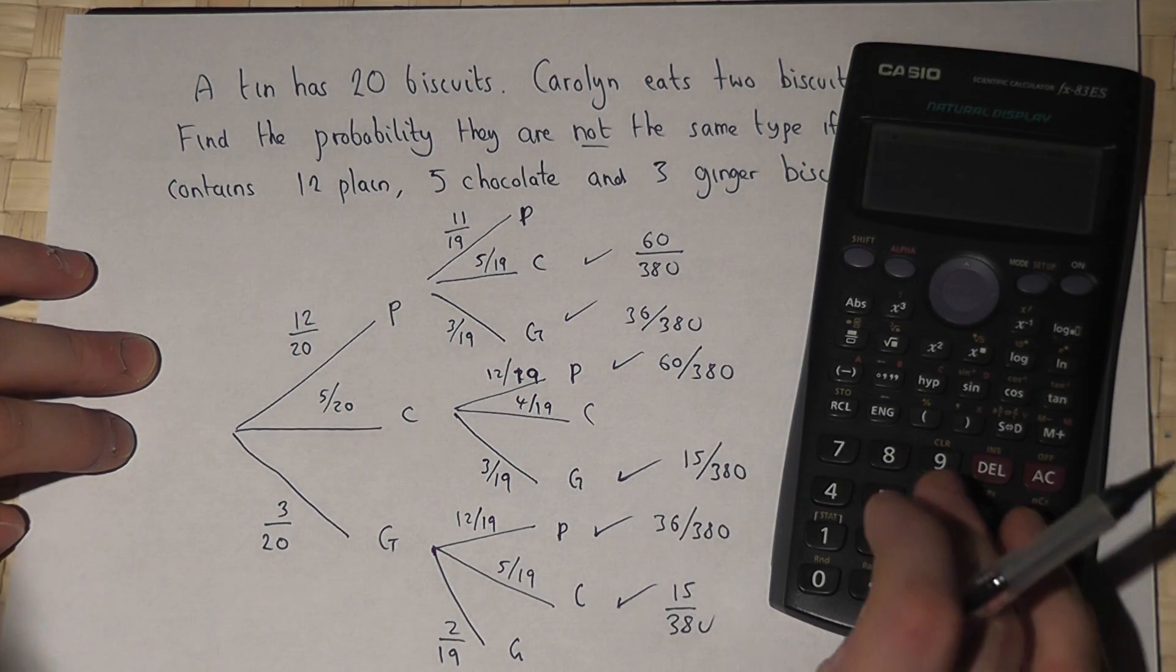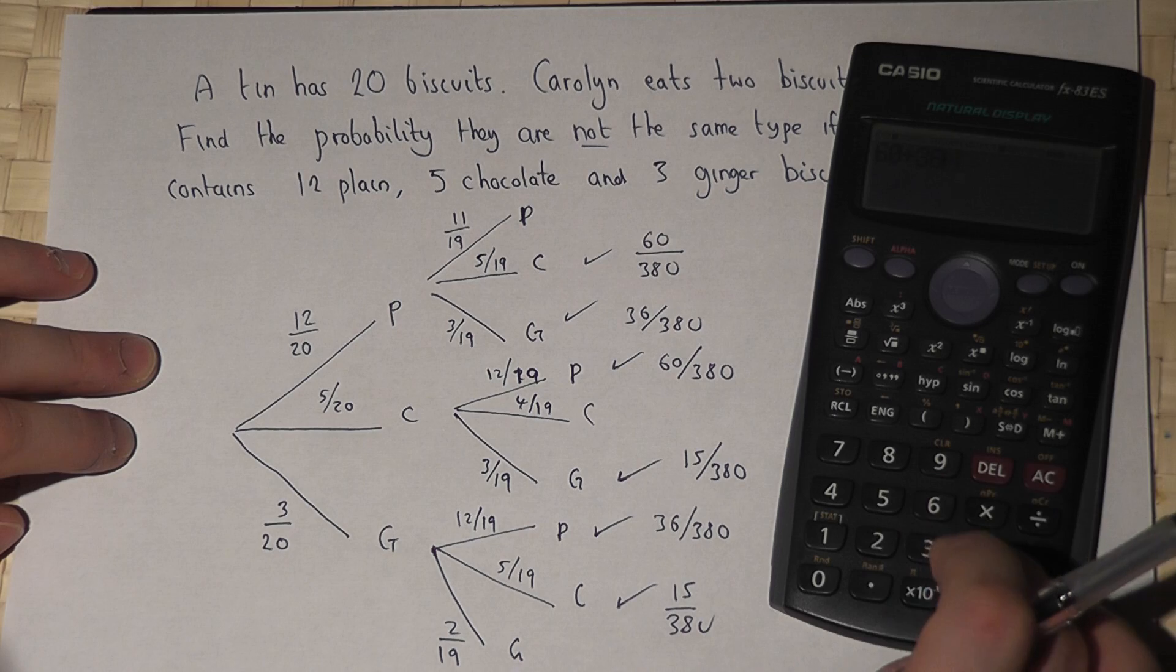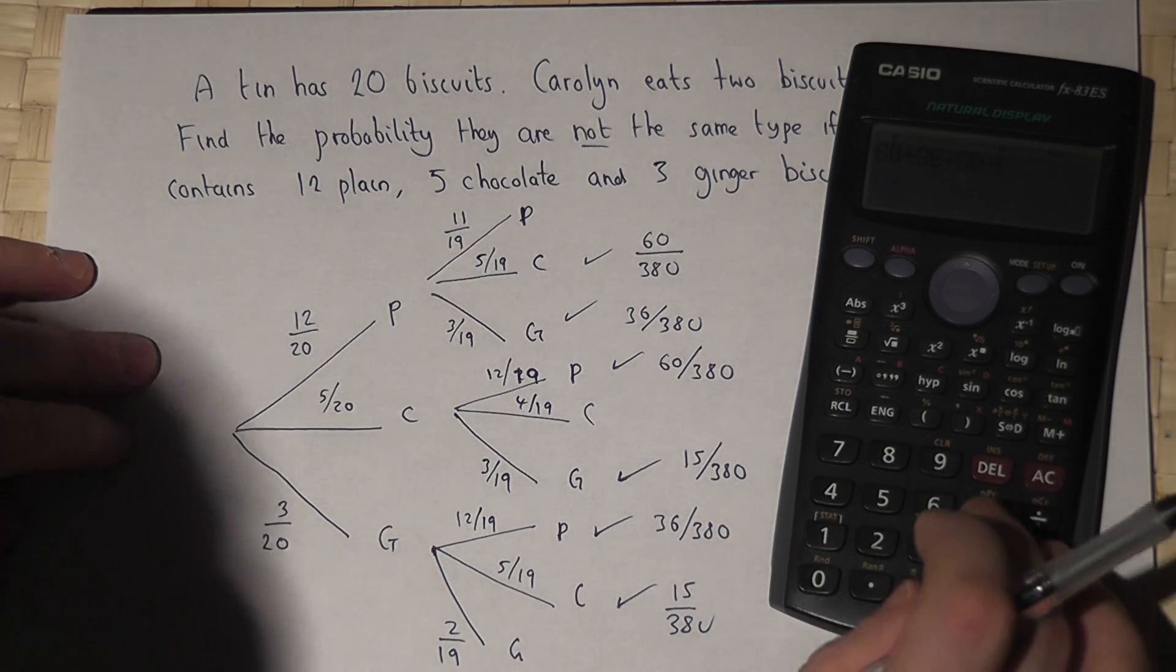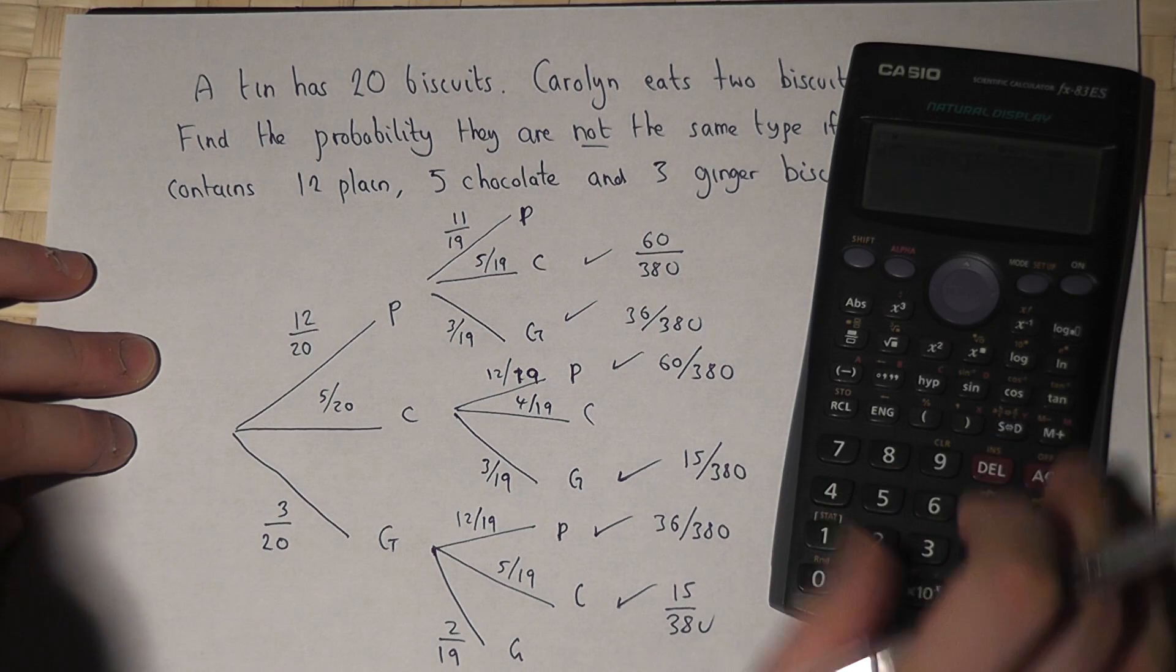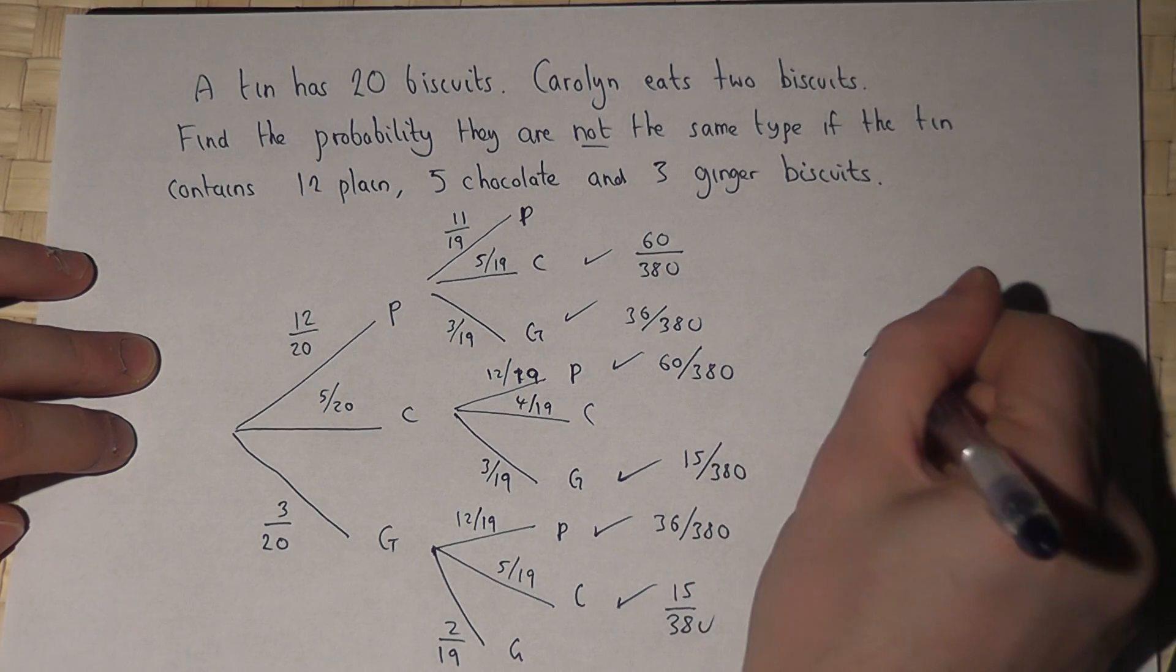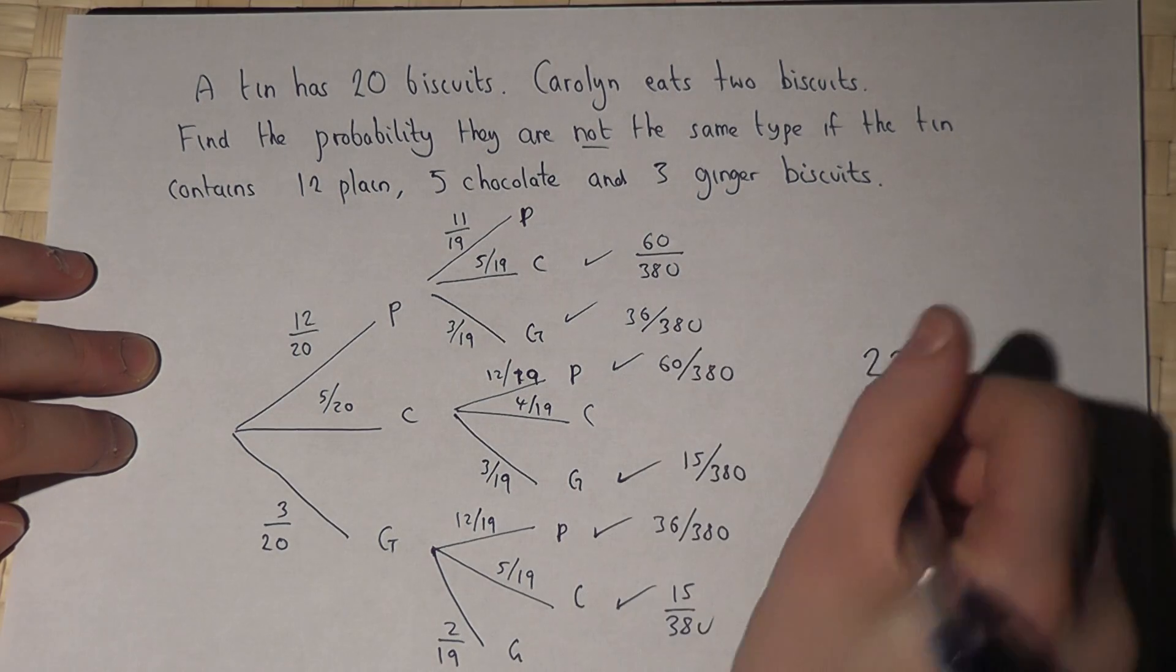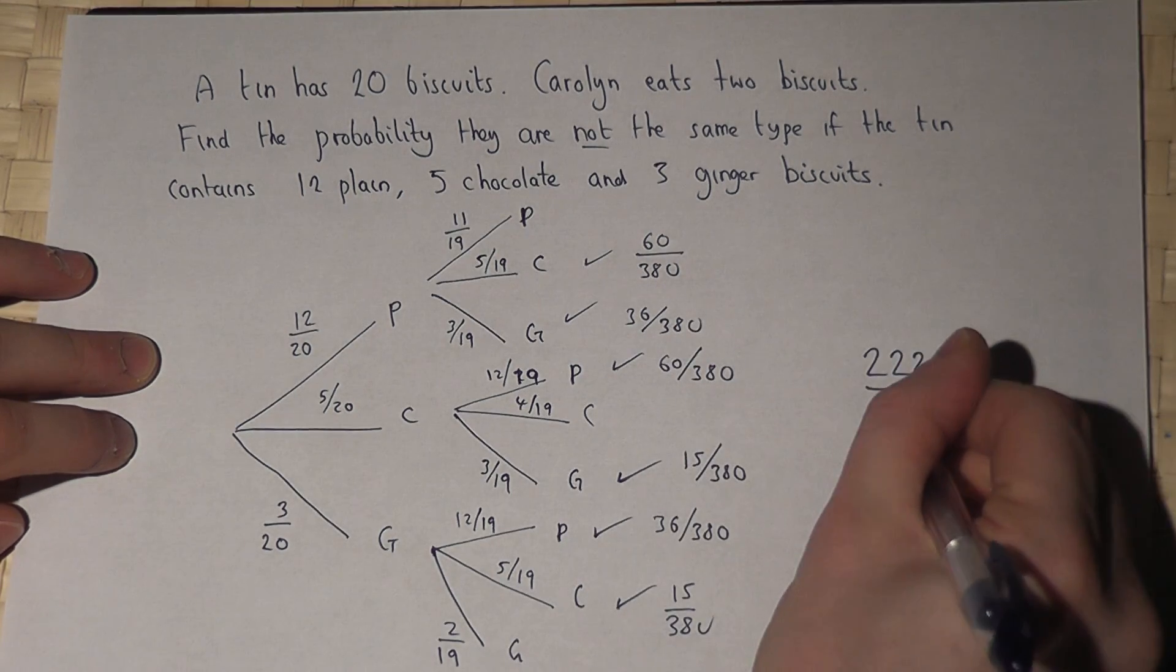So just to do this properly, 60 plus 36 plus 60 plus 15 plus 36 plus 15 gives me 222. So it's 222 all over 380.